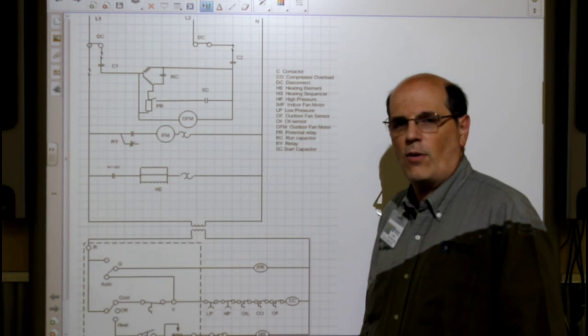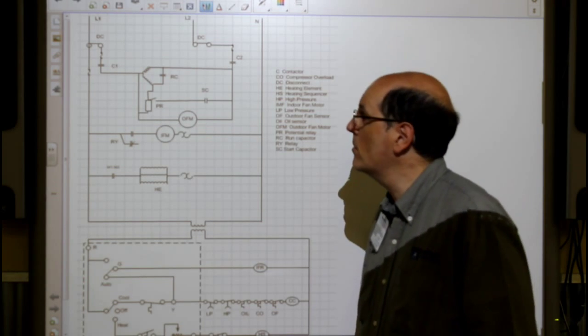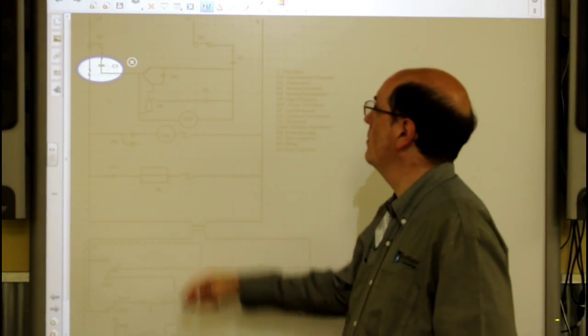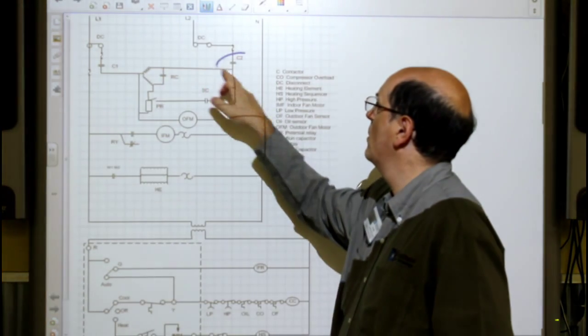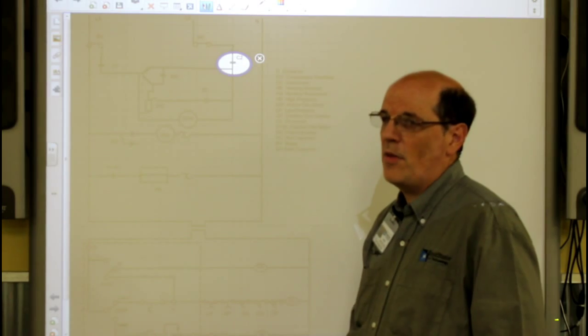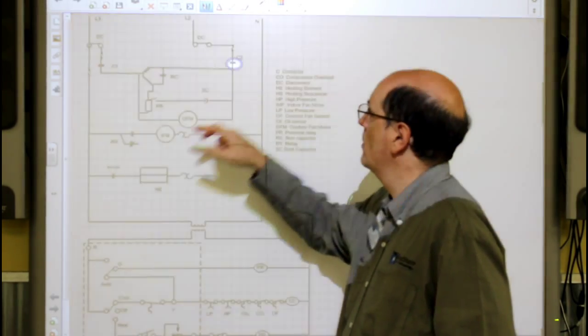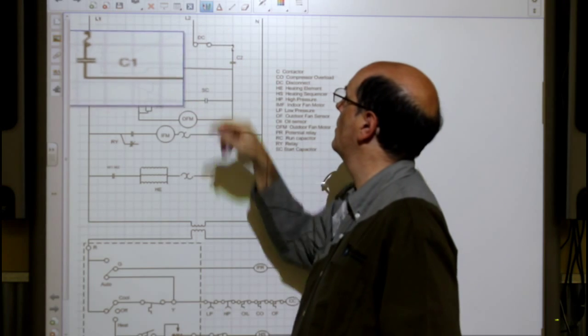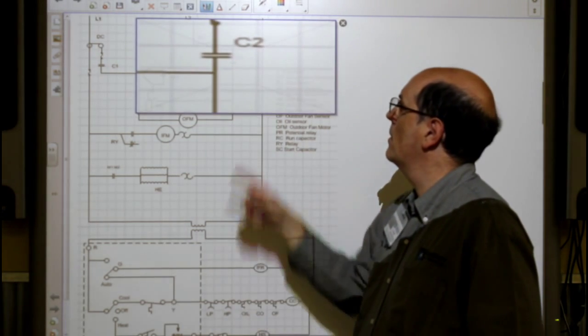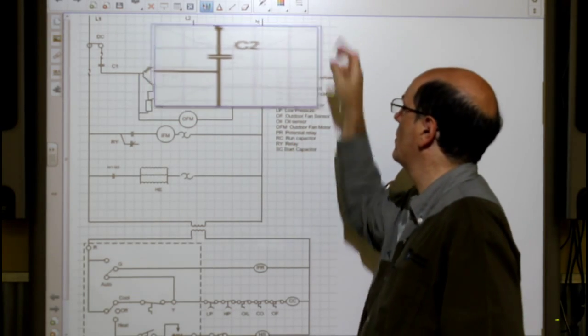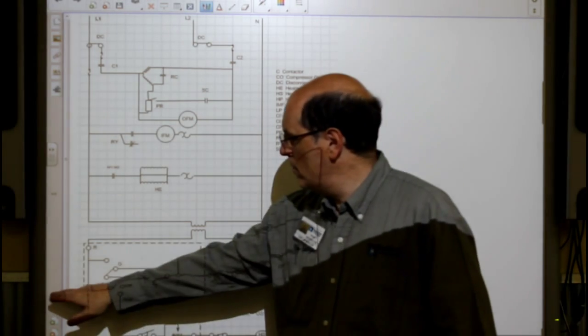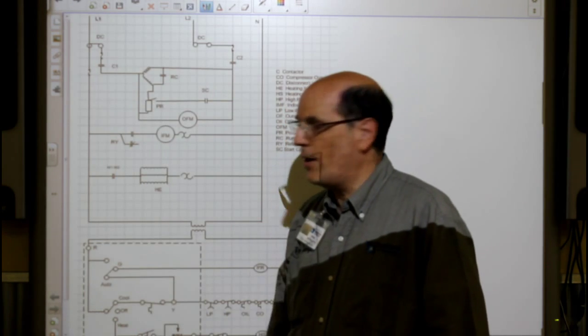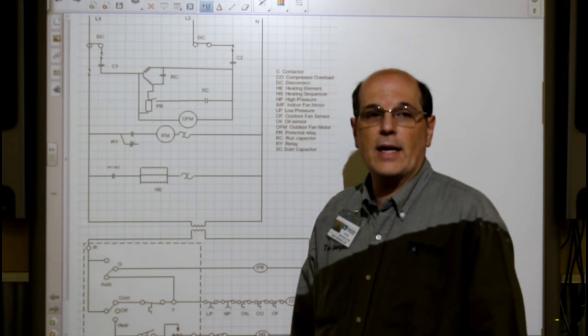When we energize that coil it's going to cause contact one and contact two to close. There's contact one. Over here's contact two. Now once again it may be a little bit difficult to see. So there's contact one, there's contact two. So remember, when we're looking at a small circuit, they're just going to show the entire symbol. When we look at a ladder diagram or a bigger circuit, they're probably going to break it up into its smaller parts.